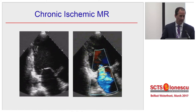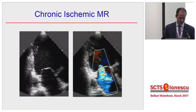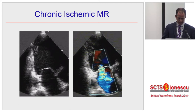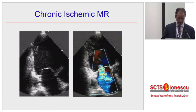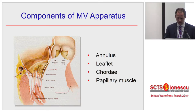Chronic ischemic MR has this typical echocardiographic picture where you see the typical seagull sign of tenting from the anterior leaflet, left ventricular dilatation and dysfunction, and of course the regurgitant jet.